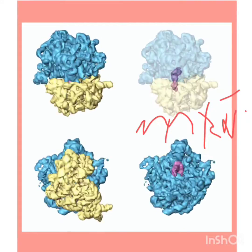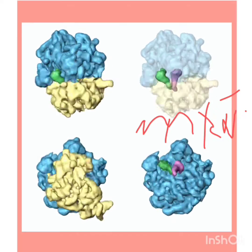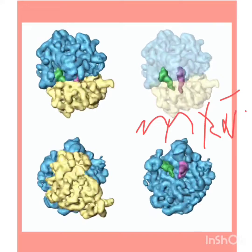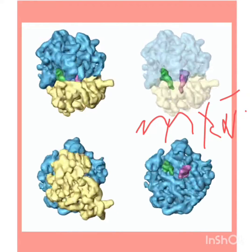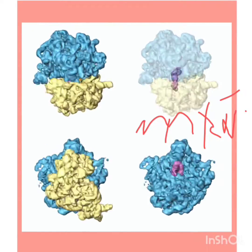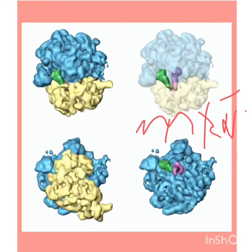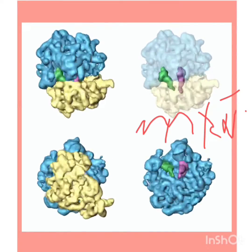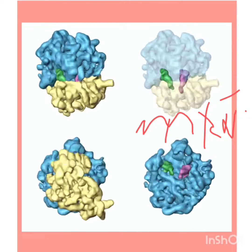Let's discuss some history. Ribosomes were first observed in the mid-1950s using an electron microscope as dense particles or granules. The main feature is that they do not have boundaries — they do not have an outer membrane. The shape of ribosomes is flattened and spherical.